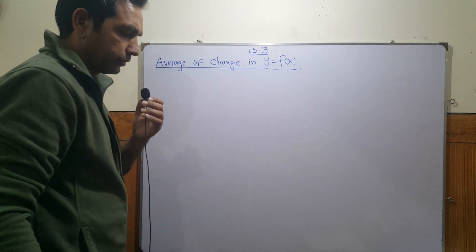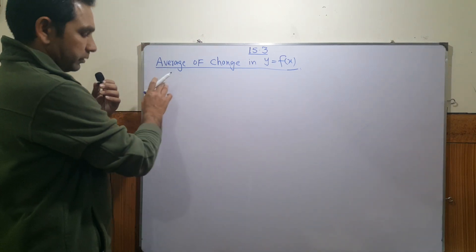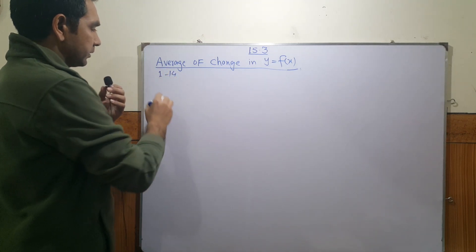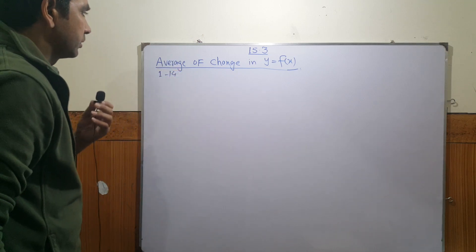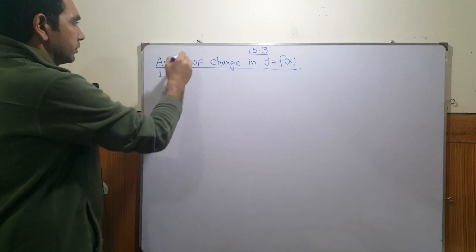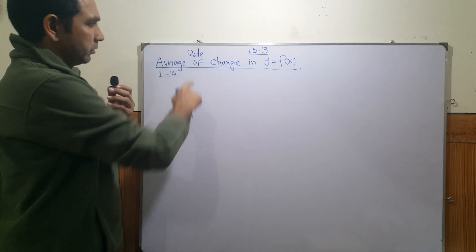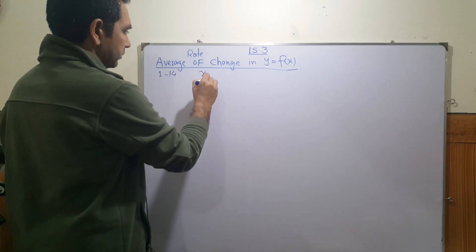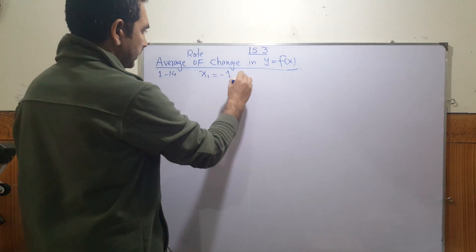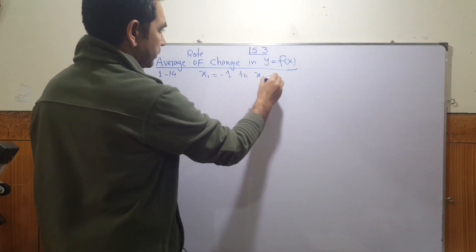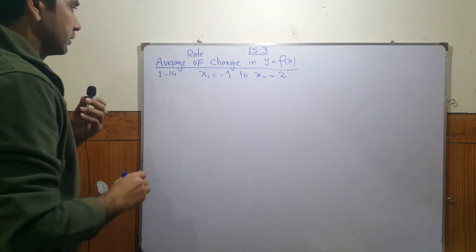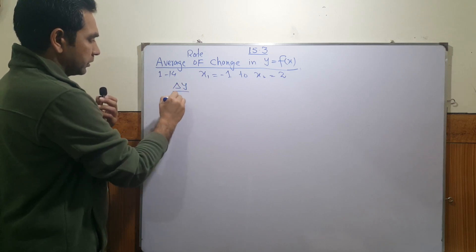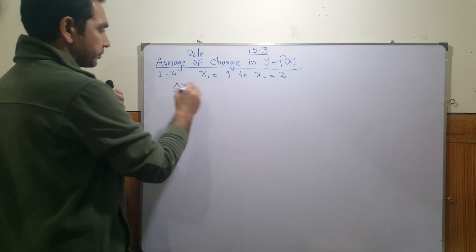In section 15.3, questions 1 to 14, they're asking you to find the average rate of change. The average rate of change in the function y = f(x) when x changes from x₁ = -1 to x₂ = 2. The average rate of change is denoted by the formula: the change in y divided by the change in x.